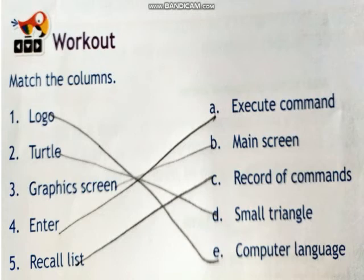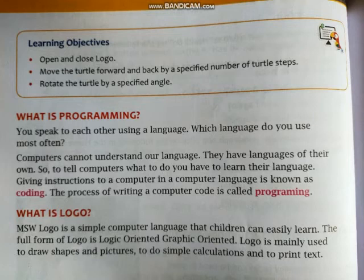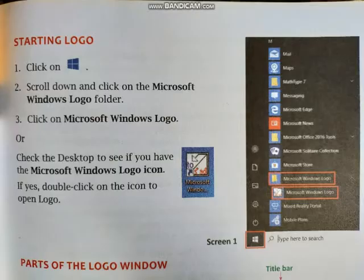So far today we have learned: first, what is programming — just as we have a language, computers also have a language. The instructions we give to a computer in its language is called coding, and the process of writing that code is called programming. Second, what is Logo — MSW Logo is a simple computer language that children can easily understand. The full form of LOGO is Logic Oriented Graphic Oriented, and it is mainly used to draw shapes and pictures, perform simple calculations, and print text.